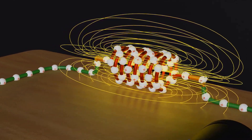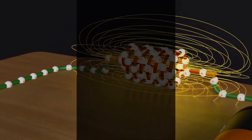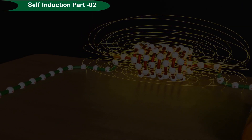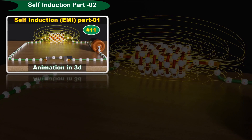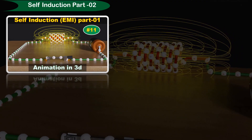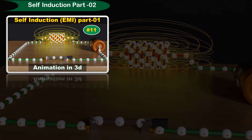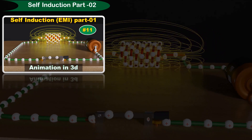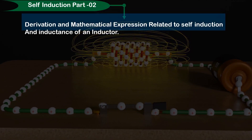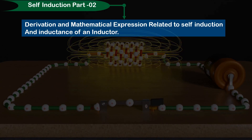This video is the twelfth part of the ongoing series on electromagnetic induction and the second part of self-induction. Please make sure you have watched the first part before watching this. In the last video we learned self-induction and the basic definition of an inductor. Today we will talk about the derivation and mathematical expression related to self-induction and inductance of an inductor.